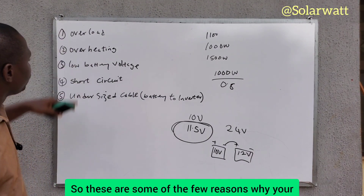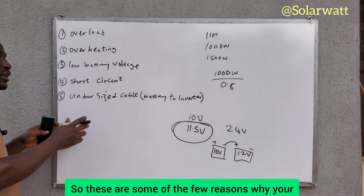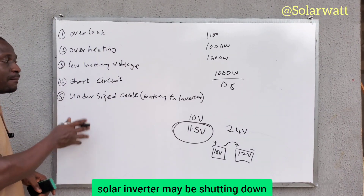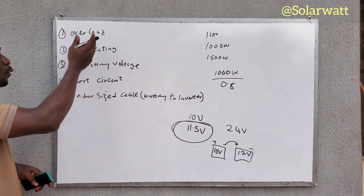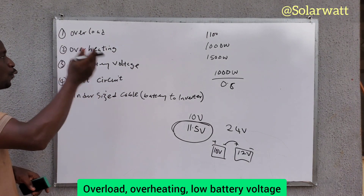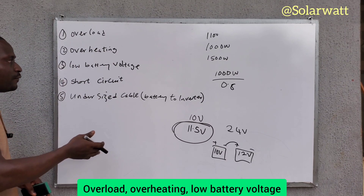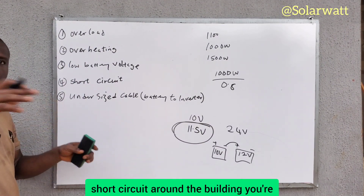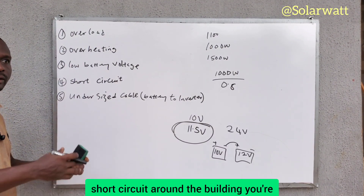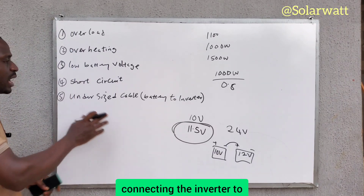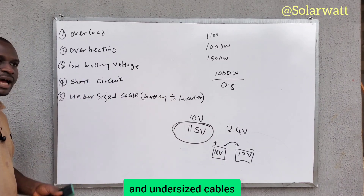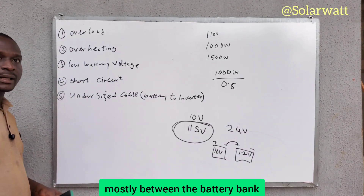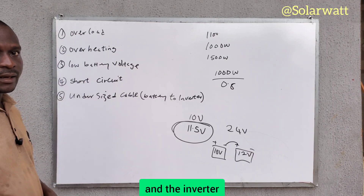These are some of the reasons why your solar inverter may be shutting down: overload, overheating, low battery voltage from your battery bank, short circuit around the building you're connecting the inverter to, and undersized cables — mostly between the battery bank and the inverter.